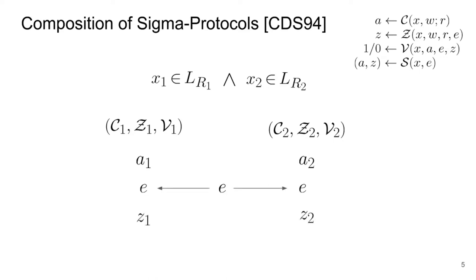If instead we want to combine the relations in disjunction, it is enough to run parallel copies of the protocols, this time with little challenges e1 and e2 that can be chosen by the prover, but are bound to satisfying the following equation with respect to the verifier's challenge e. This way, it is enough to know one of the witnesses in order to complete the proof. For example, if the prover does not know a witness for x2, she can choose e2 first and simulate a second transcript with it. She will then compute a1 normally. When challenge e is known, she will set e1 to be e minus e2.